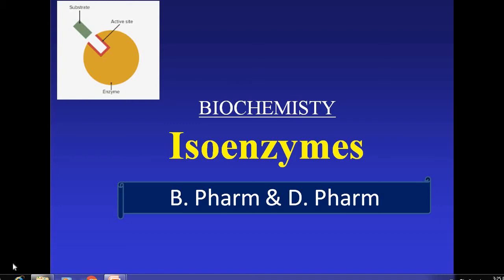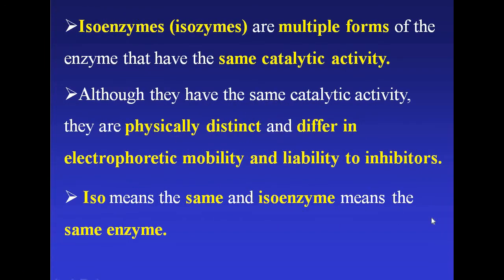Hello everyone. Today in Enzymology we are going to discuss about isoenzymes. Isoenzymes are the multiple forms of an enzyme that have the same catalytic activity. Although they have the same catalytic activity, they are physically distinct and differ in electrophoretic mobility and lability to inhibitors. Iso means the same, and isoenzyme means the same enzyme.